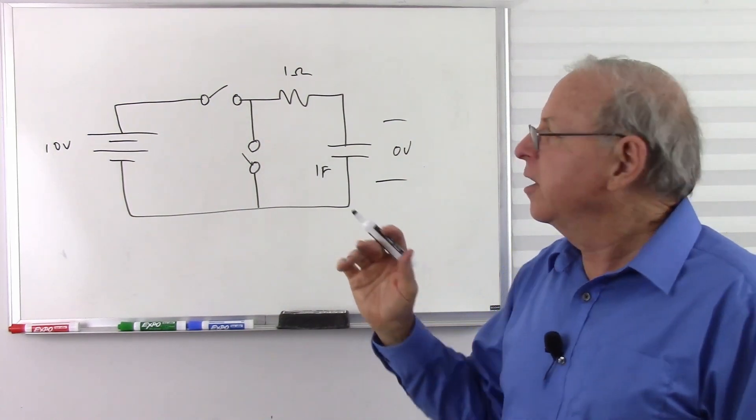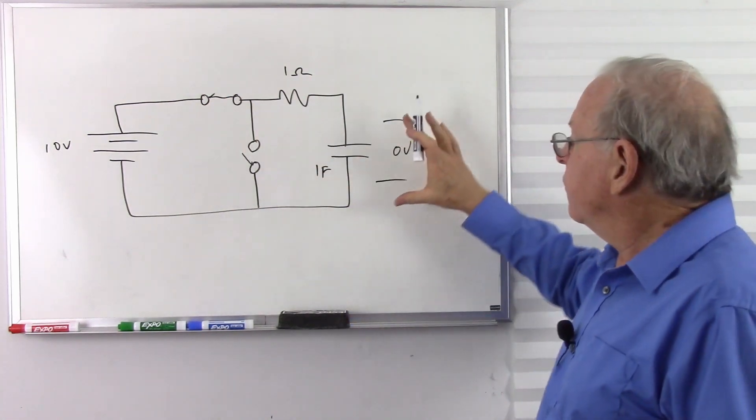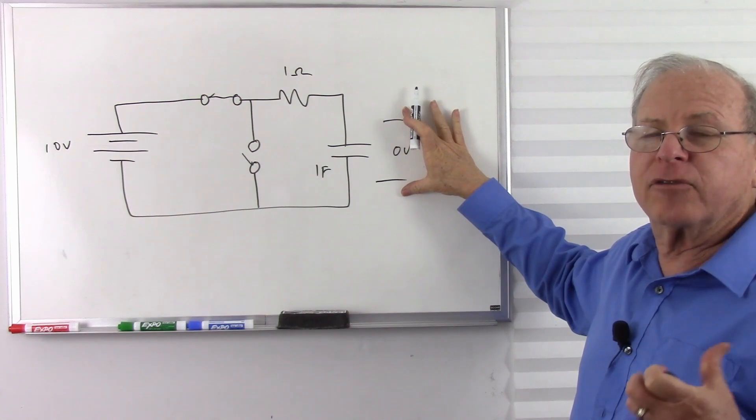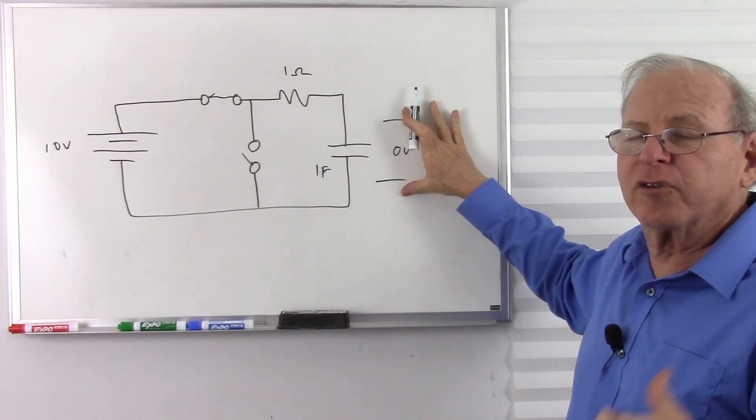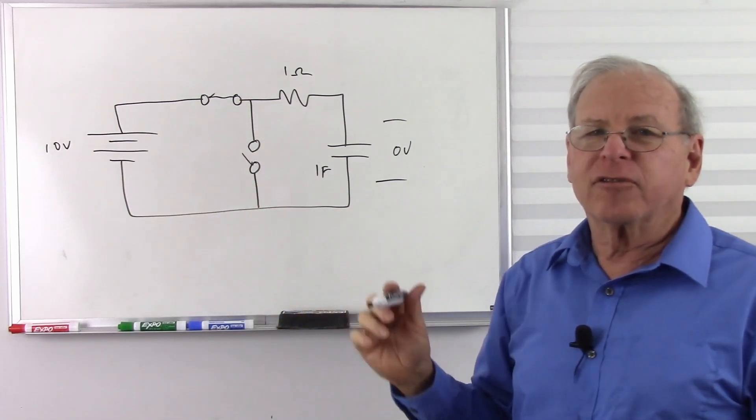What that means is once I close this switch, after 1 second the voltage across my capacitor will be 63.2% of this voltage over here. That's what a time constant is.